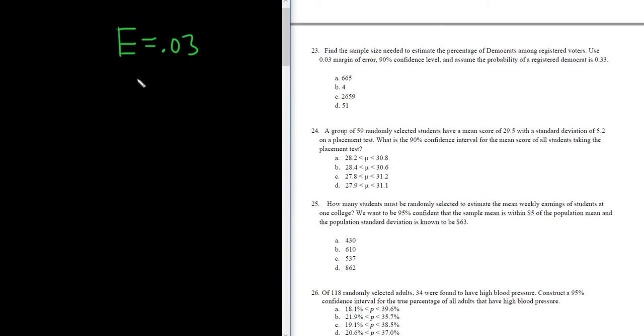90% confidence level. And assume the probability of a registered Democrat is 0.33. So we know that the target proportion of a registered Democrat is 0.33.